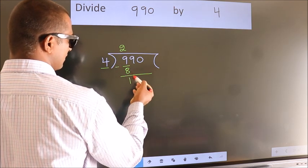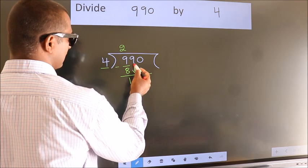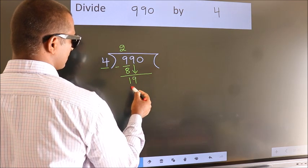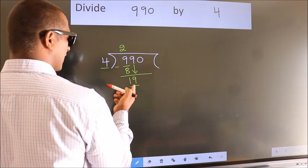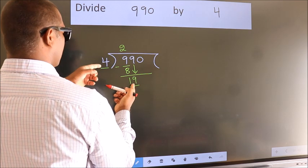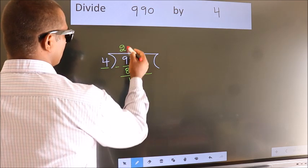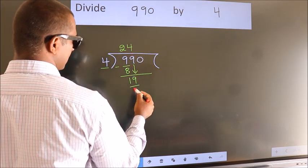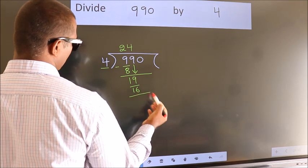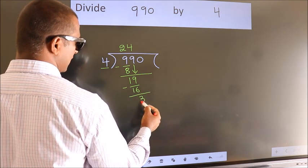After this, bring down the beside number. So 9 down. So 19. A number close to 19 in the 4 table is 4 4s 16. Now we subtract. We get 3.